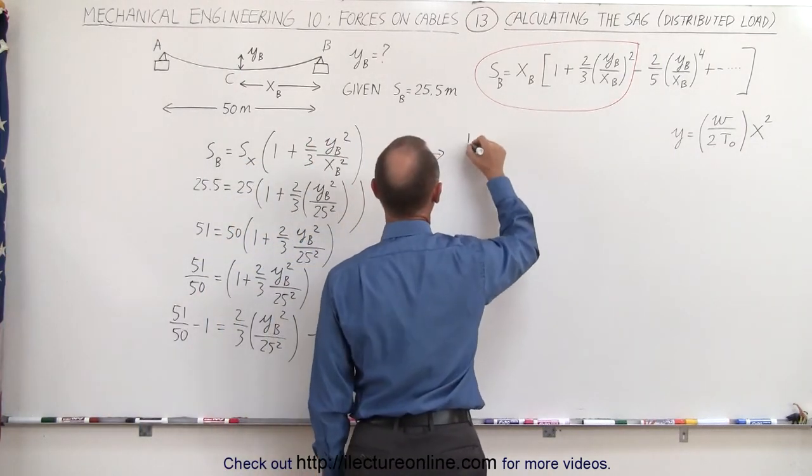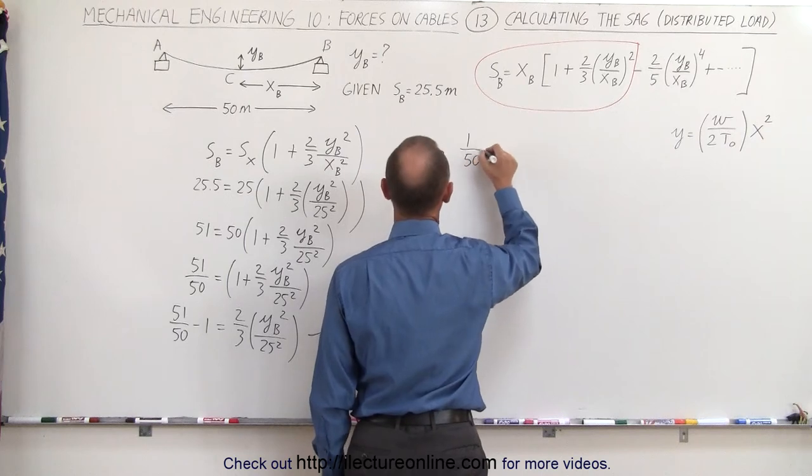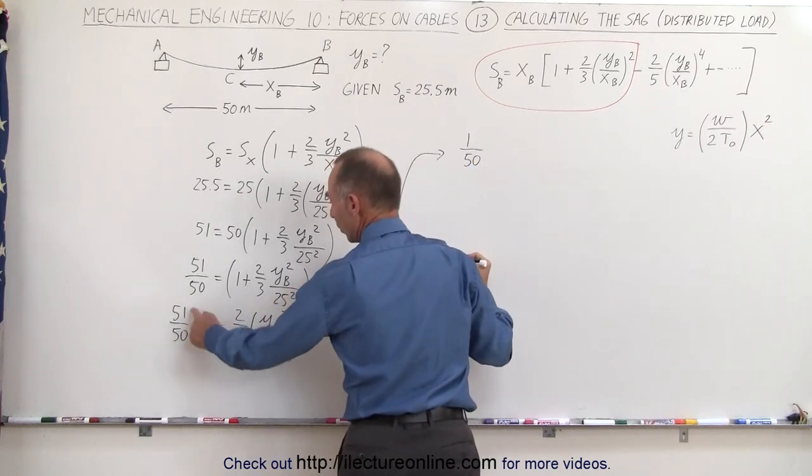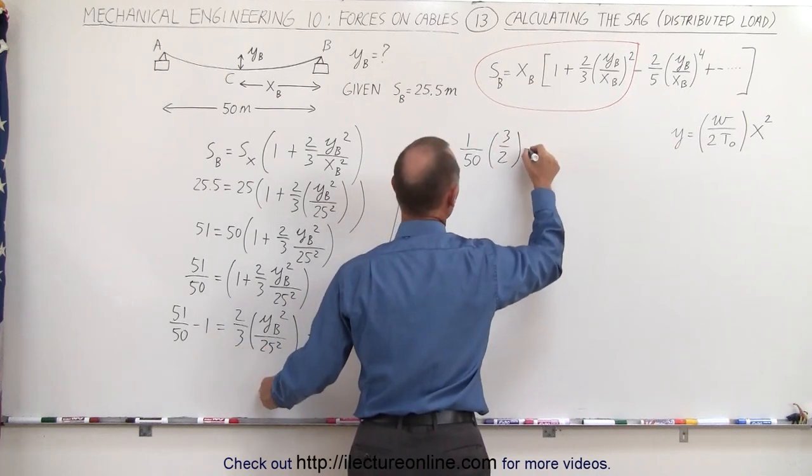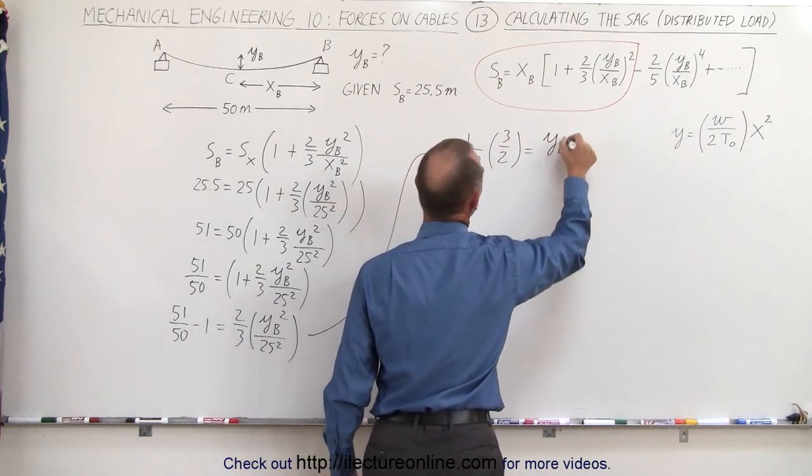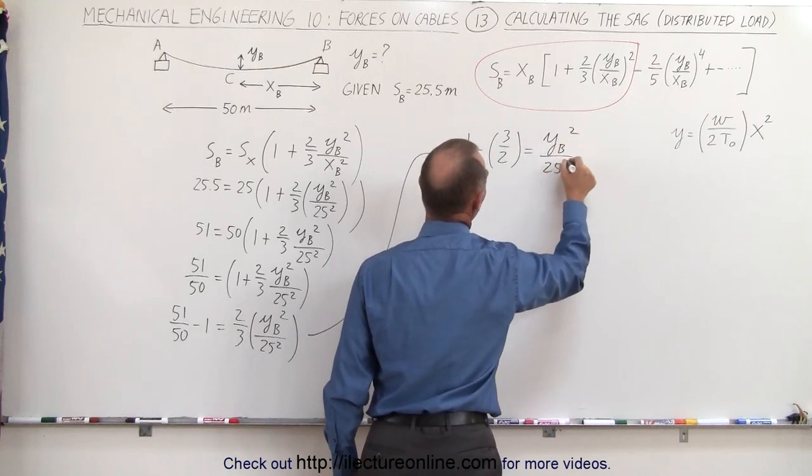So that means we get one divided by 50, because 51 divided by 50 minus one is one divided by 50, multiply that times three over two is equal to Y sub B squared divided by 25 squared.